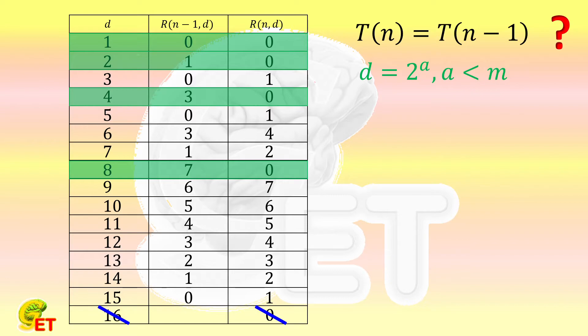Here, because n is equal to 2 to the m-th power, n is divisible by d. That is to say, R(n,d) is always equal to 0 in this case. n minus 1 and n are coprime. That is to say, n minus 1 and d must be coprime. In fact, R(n-1,d) in this case is equal to d minus 1. That is, 2 to the a-th power minus 1.